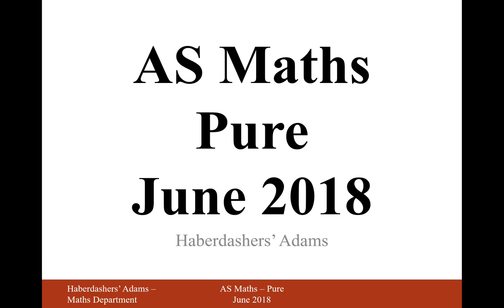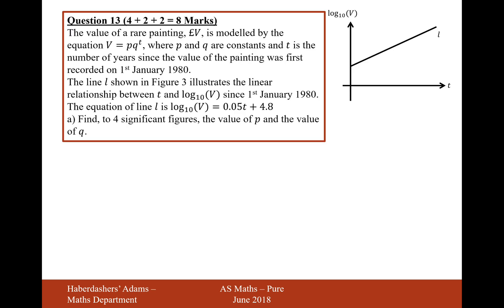Hello there, welcome to the June 2018 paper. Here we're looking at question 13. The value of a rare painting, V, is modeled by the equation PQ to the power of T, where P and Q are constants, and T is the number of years since the value of the painting was first recorded on the 1st of January 1980.